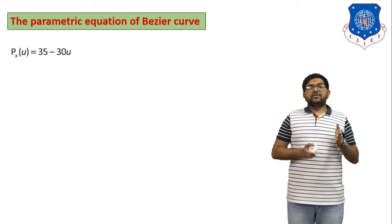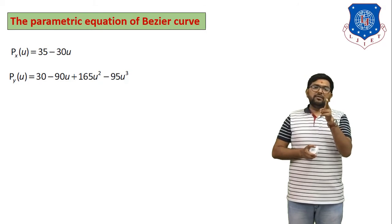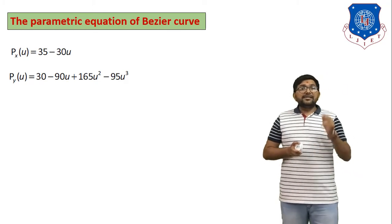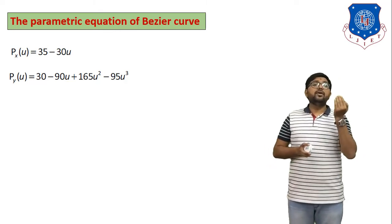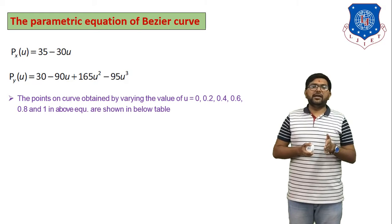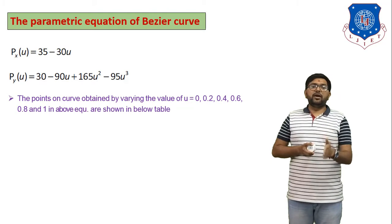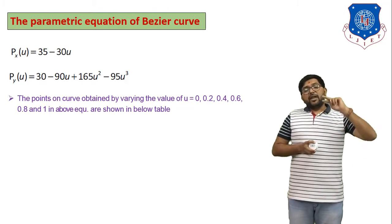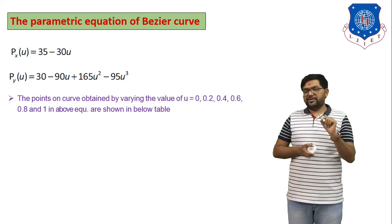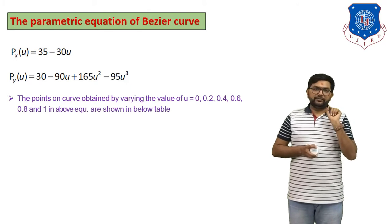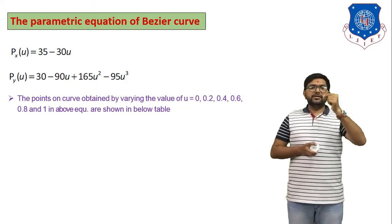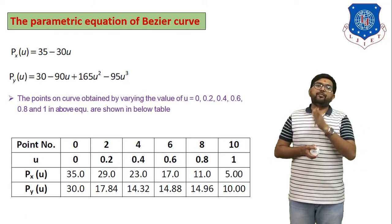These are the parametric equations of the Bezier curve. Now we substitute different values of u into both equations. The points on the curve are obtained by varying u = 0, 0.2, 0.4, 0.6, 0.8, and 1. In each equation there is only one unknown, u. Put each value of u into both P(u)x and P(u)y equations to get the corresponding coordinates.